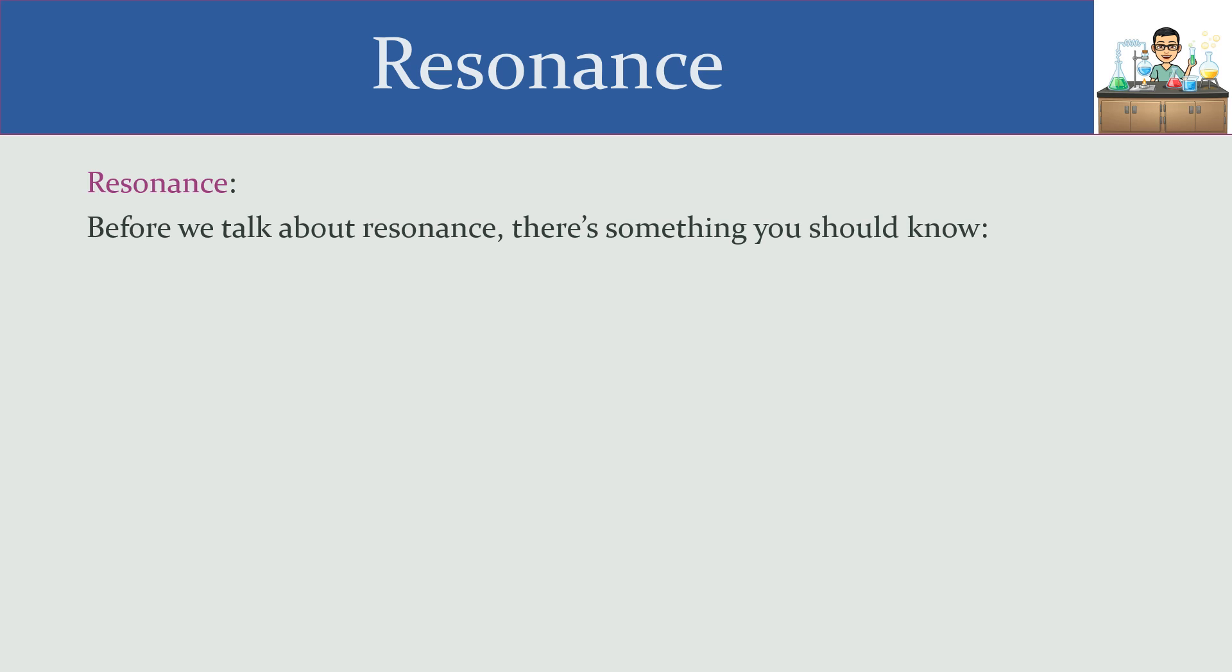Before we talk about resonance, let's figure out where the word comes from. The root word S-O-N means sound, and resonance means that we have something that's going back and forth, kind of like a sound and an echo. In particular, what we're going to talk about is the movement of electrons.